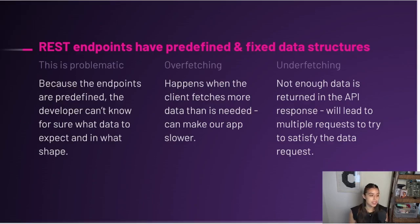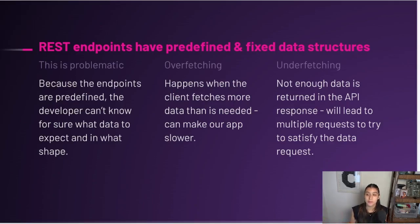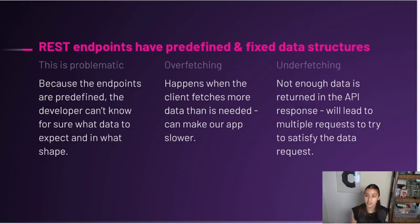For example, we had to make three different requests. But if we had created this API for our app's needs, we might have said, 'let's just put all that in one endpoint because we know we're going to need all three.' That's not the flexibility you get with REST because they're defined by someone else. The other problems are overfetching and underfetching. We saw overfetching happen to us all three times — it's when the client fetches more data than is needed, which can make our apps slower. Right now we're only making small requests, but imagine making hundreds of requests and getting ten times the data back that you expected.